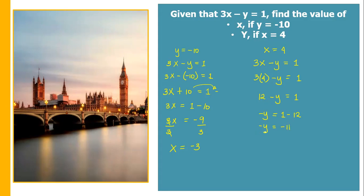Divide both sides by negative 1. Negative y divided by negative 1 equals positive y. Negative 11 divided by negative 1 equals positive 11. So the answer is y equals positive 11 when x is equal to 4.